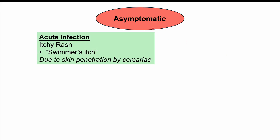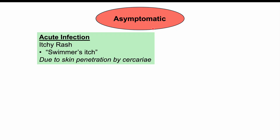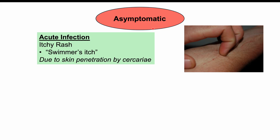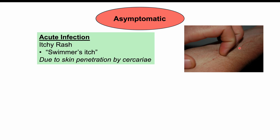When a patient becomes infected, it's important to note that patients can be asymptomatic — meaning they have no symptoms at all — and this is quite common. However, when they first get infected, they can have an acute infection called swimmer's itch. When cercariae penetrate the skin, they can cause little bumps or itchy spots on the skin, producing an itchy rash. This is a temporary thing, and all Schistosoma species will cause a swimmer's rash.